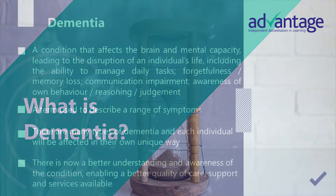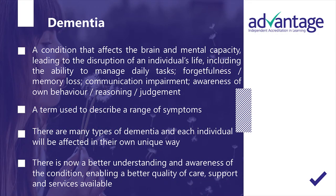So, what is dementia? Dementia is a condition that affects the brain and mental capacity, leading to the disruption of an individual's life, including the ability to manage daily tasks, forgetfulness and memory loss, communication impairment, an awareness of one's own behaviour, reasoning and judgement. It's also a term used to describe a range of symptoms. There are many types of dementia and each individual will be affected in their own unique way.